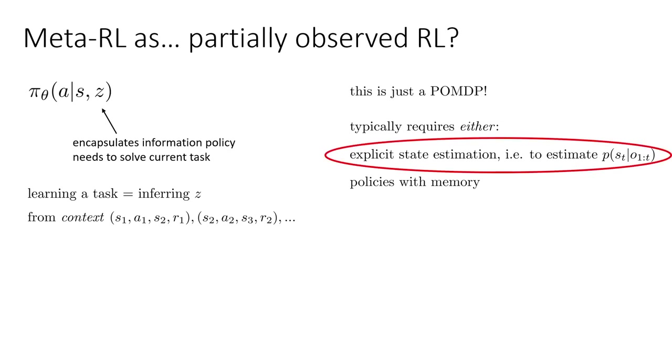Now, policies with memory, that is essentially the RNN meta-learners that we talked about before. So those could be viewed just as well as methods for solving POMDPs, where the task is unknown, and it's supposed to be inferred from memory.